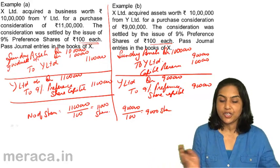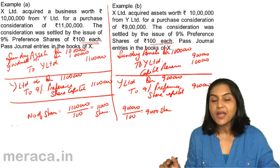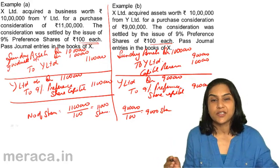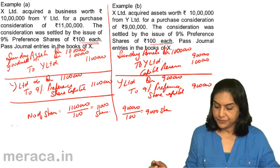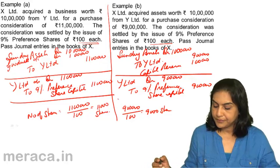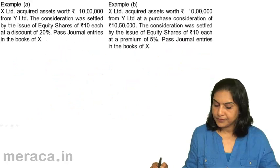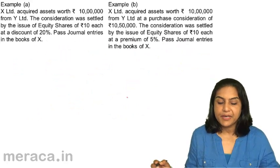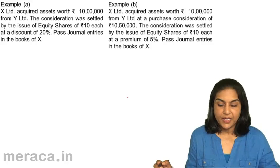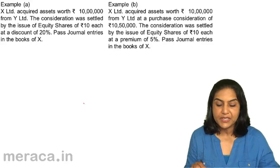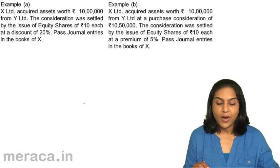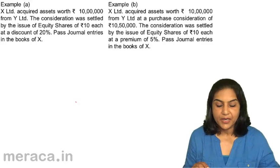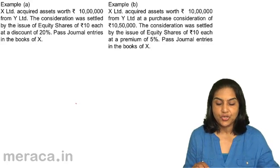In both example A and example B, shares were issued at par. Let us now consider a variation when shares are being issued at a premium or at a discount. X Limited acquired assets worth 10 lakh from Y Limited, and the consideration was settled by the issue of equity shares of 10 each at a discount of 20 percent.